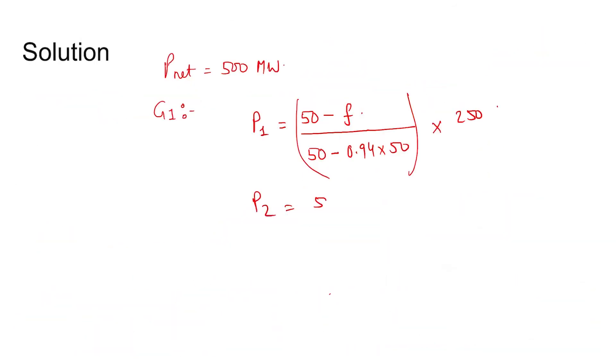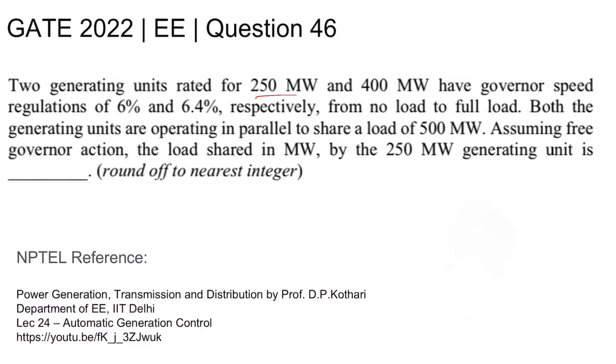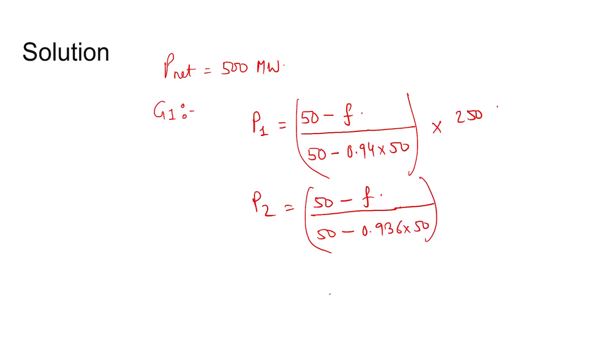And for generator two it is 50 minus operating frequency divided by 50 minus 6.4 percent drop, 0.936 times 50, after drop that is full load frequency after drop, multiplied by generating capacity which is 400. Determine first the frequency, that is operating frequency, and from that we will get P1 and P2.